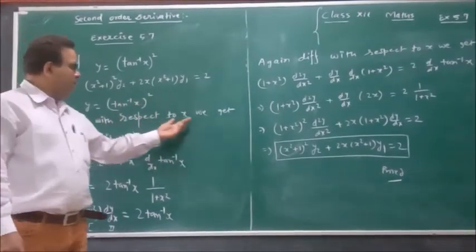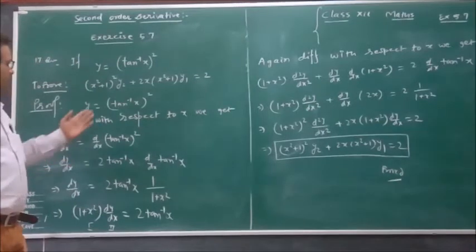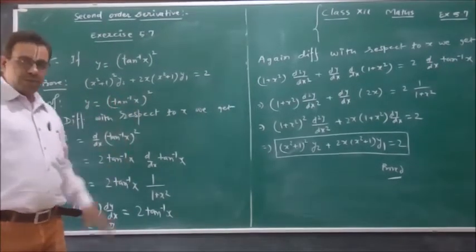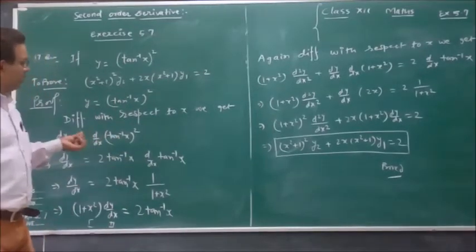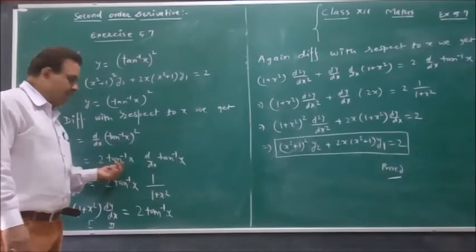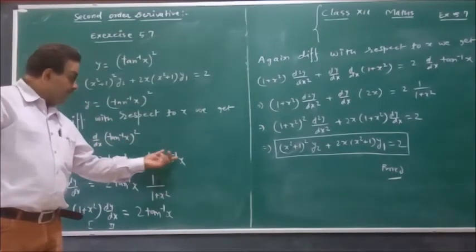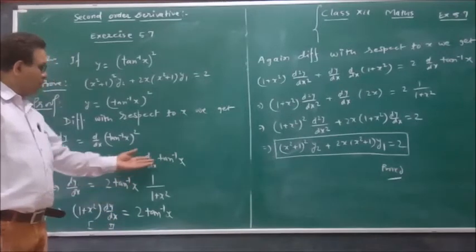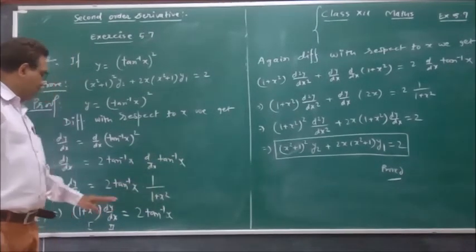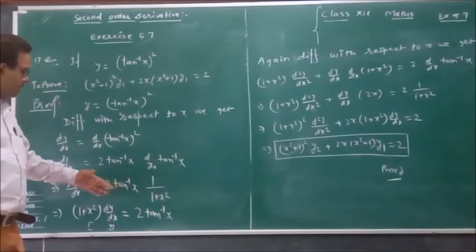Since y equals tan inverse x whole squared, differentiating with respect to x, we get dy divided by dx equal to d by dx of tan inverse x whole squared. Remembering the chain rule, we get the differentiation of tan inverse x is equal to 1 by 1 plus x squared, times dy divided by dx.